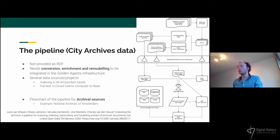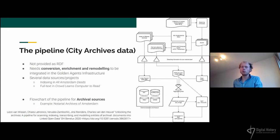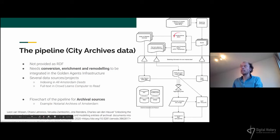Here on the right you see an overview of the pipeline that describes how we process the data from the notarial archives of Amsterdam — from the notaries from the 16th century up until the 19th century. At the top you see the collection of notarial books, the physical material organized in the archives. This material is being scanned, and from these scans there are two projects: the All Amsterdam Deeds Project, a crowdsourcing project building an index on this material, and the Crowd Learns Computer to Read Project, which trains an HTR model for handwritten text recognition to get the full text.